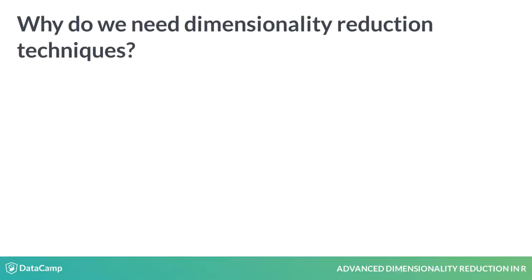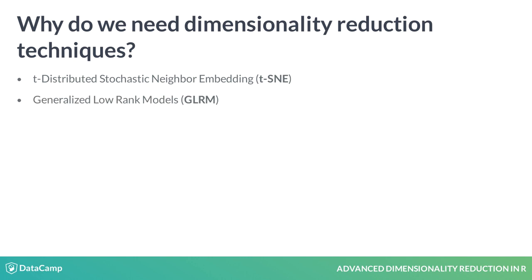In this course, we will learn how to apply two state-of-the-art dimensionality reduction techniques: TSNE and Generalized Low-Rank Models. The Distributed Stochastic Neighbor Embedding, or TSNE, is an algorithm that performs non-linear dimensionality reduction, and we will explore how to use it in predictive models.